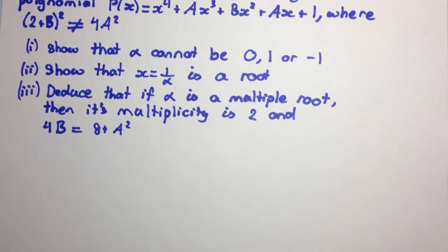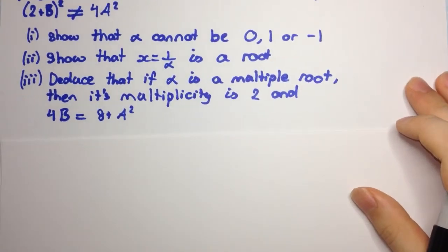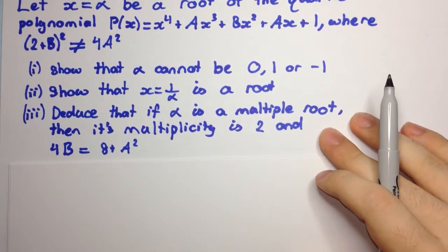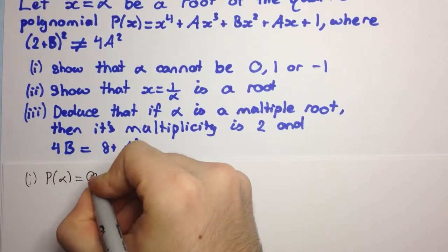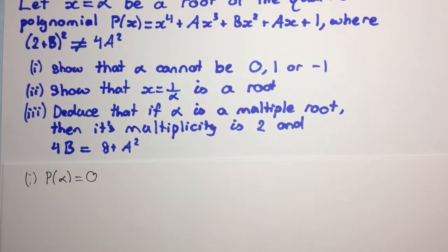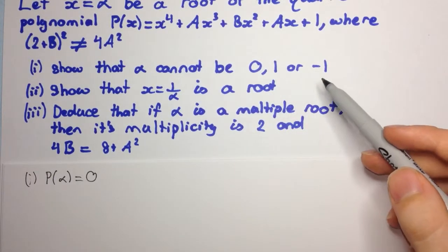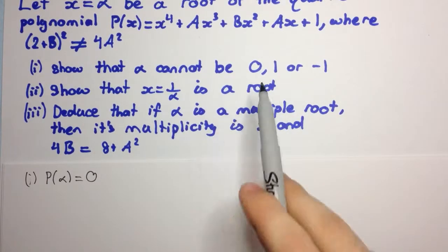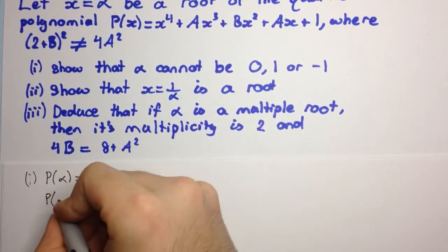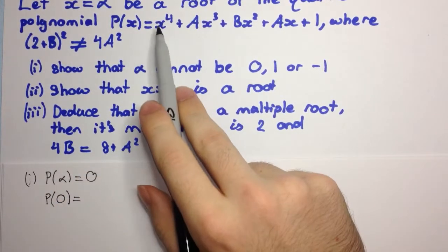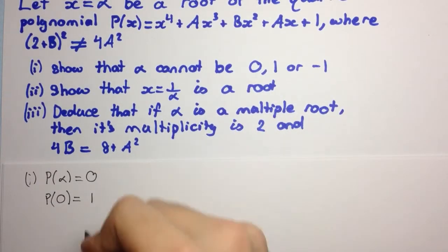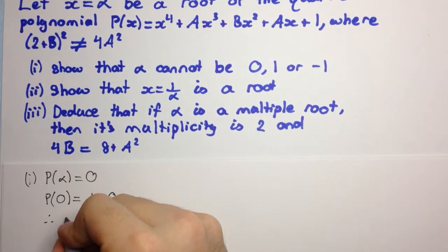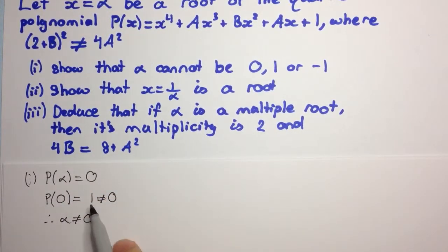Let's have a look at part 1. We need to show that alpha cannot be 0, 1, or minus 1. We know that alpha is a root, and so p of alpha is equal to 0. So let's test alpha equal to 0. P of 0 is subbing 0 into the polynomial — all the terms with x will become 0, and we get just 1. So we get 1, and that's not equal to 0. Therefore alpha can't equal 0, because p of 0 does not equal 0.